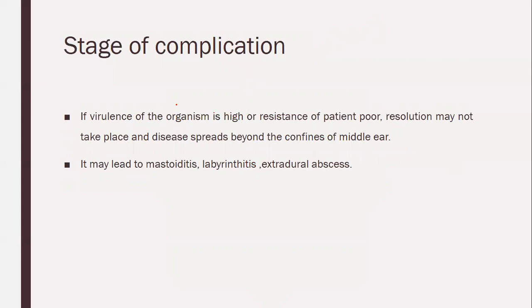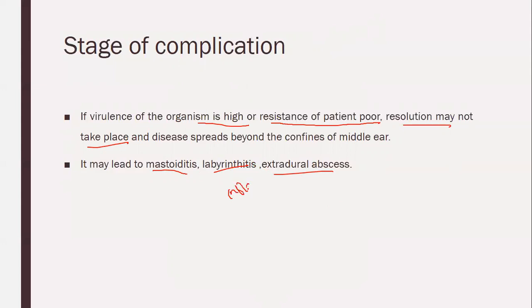Stage of complications: If the virulence of the organism is high and the resistance of the patient is poor, resolution may not take place, keeping the infection active. If the infection remains very active, this may lead to mastoiditis, labyrinthitis, and extracranial or intracranial involvement. Labyrinthitis means inflammation of the inner ear, because infections can extend into the inner ear and cause infection.